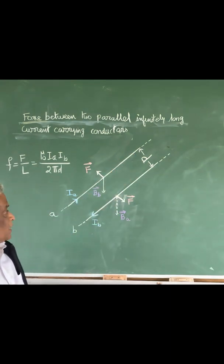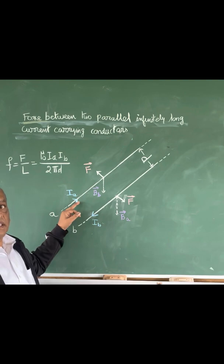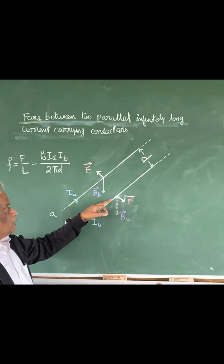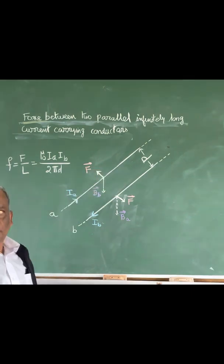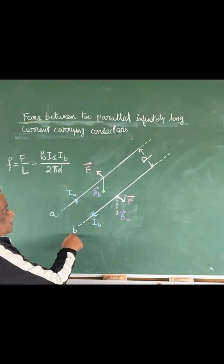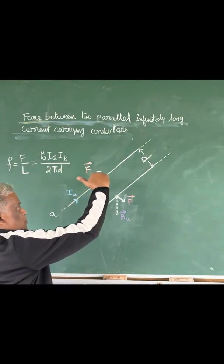The magnetic field created by conductor A on B is downward at this point. The magnetic field created by conductor B on A is also downward.